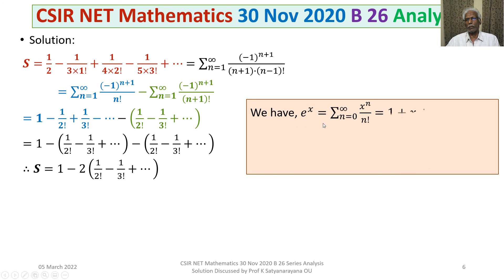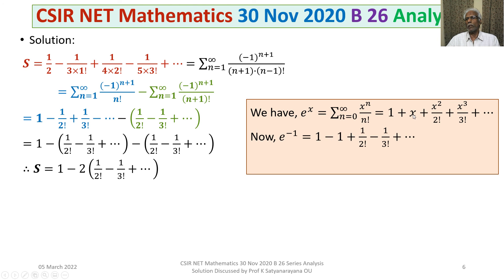We recall the expansion of e^x: sigma n equals 0 to infinity of x^n over n factorial, which expands as 1 plus x plus x squared over 2 factorial plus x cubed over 3 factorial and so on. Putting x equals minus 1: the 1 and minus 1 cancel, and we get 1 over 2 factorial minus 1 over 3 factorial plus 1 over 4 factorial and so forth. That equals e to the power of minus 1, so the bracketed series equals e to the minus 1.